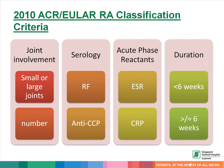Using the 2010 ACR and EULAR classification criteria for rheumatoid arthritis, a definite RA is based upon the presence of synovitis in at least one joint, the absence of an alternative diagnosis that better explains the synovitis, and the achievement of a total score of at least 6 out of a possible 10 from four domains, which include features of joint involvement, serology, acute phase reactants, and duration of the disease.